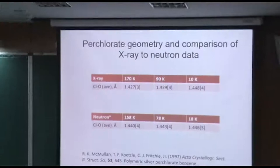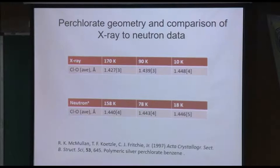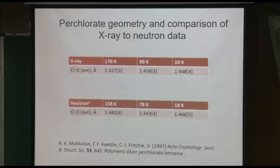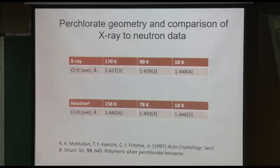Just comparing the perchlorate part of that structure, it's probably the most dramatic change because of its almost spherical size and it vibrates a lot. So you can see that at very low temperature, the neutron and the x-ray values for the CLO distance agree really well, but there's much less variation in the neutron distances over temperature.